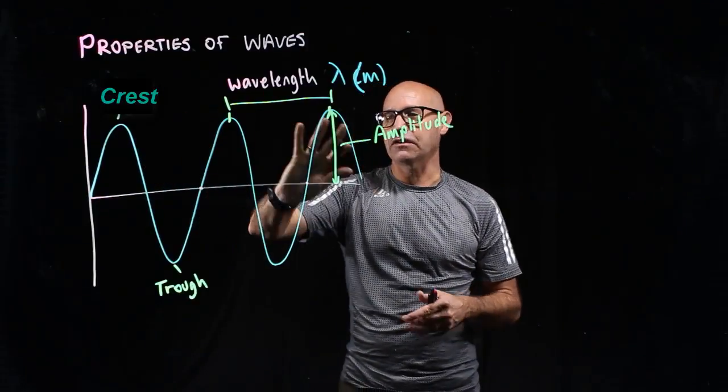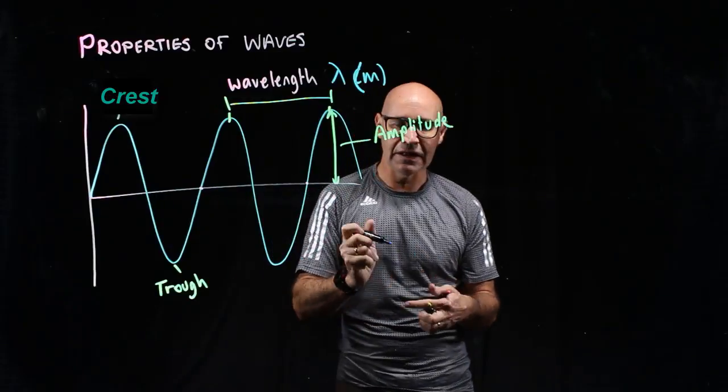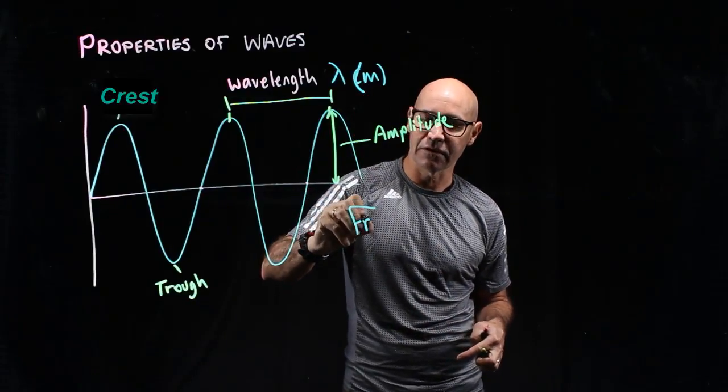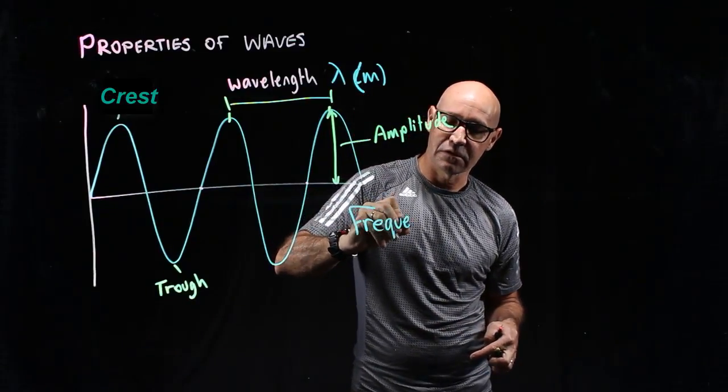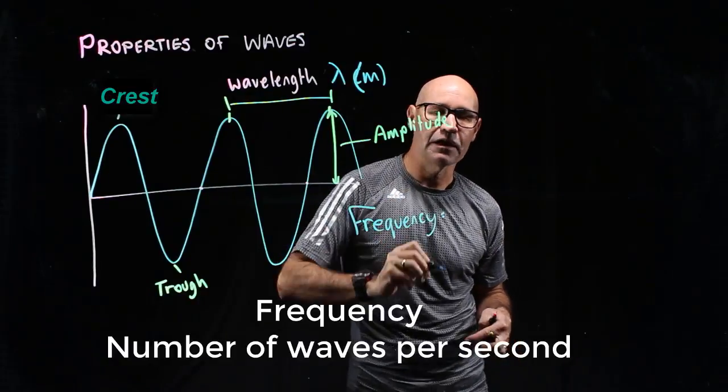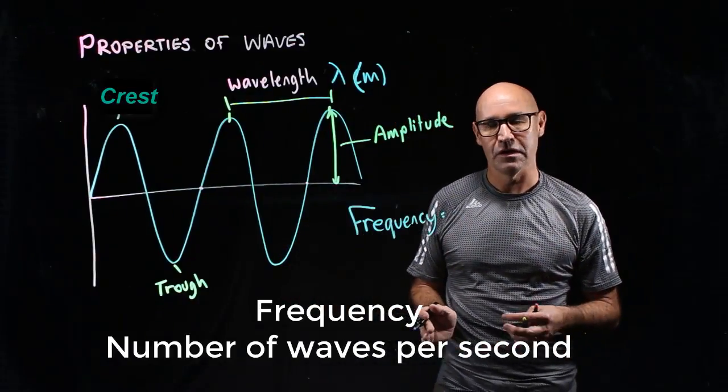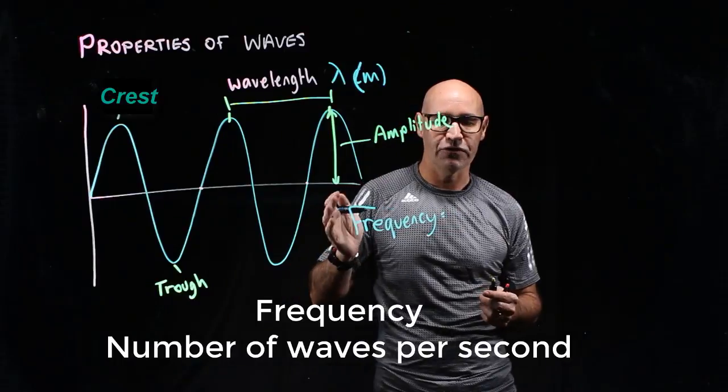There's another measure that's hardest to draw, and that's called frequency. Frequency is defined as the number of waves past a given point per second.